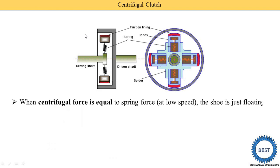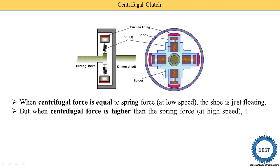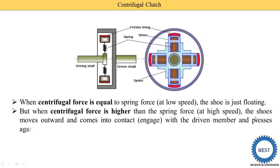When the centrifugal force is equal to the spring force, the shoe is floating — as seen in this diagram. When we increase the speed of the driving shaft, the centrifugal force increases. When the centrifugal force is higher than the spring force, the shoe moves outward and comes into contact with the pulley.